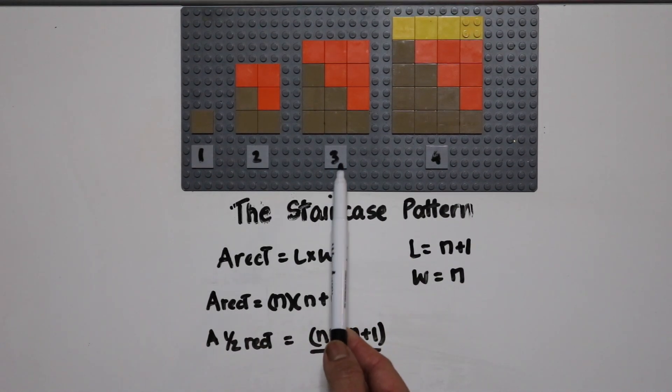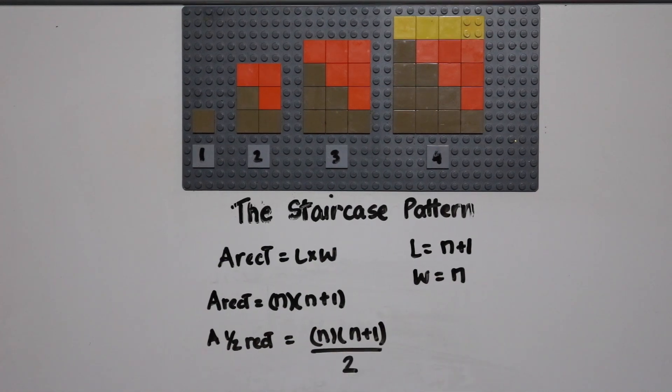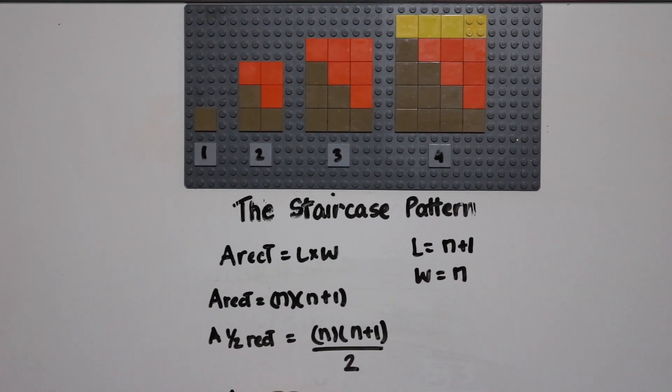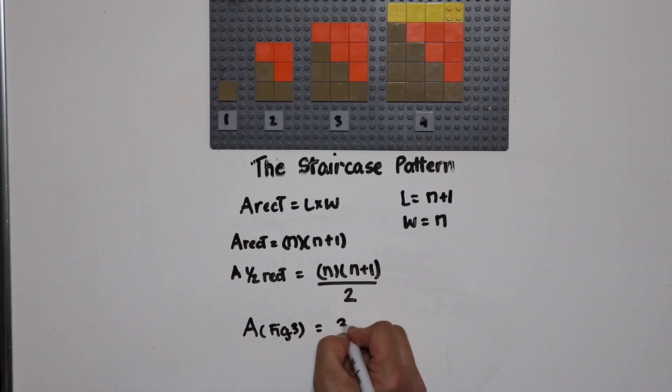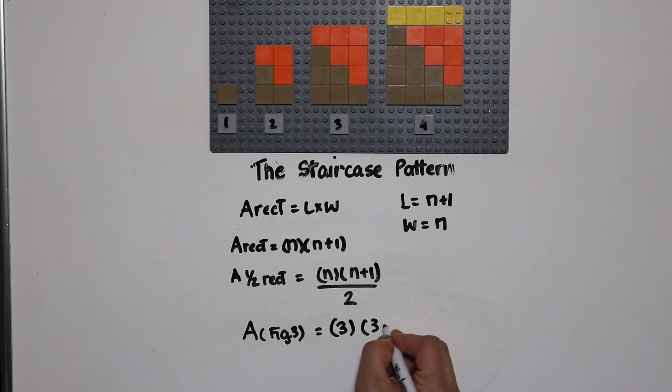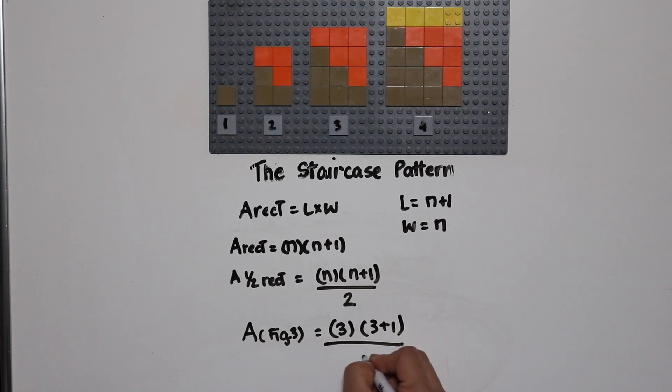So let's take figure three. If we've got area for figure three, it will be three times three plus one divided by two.